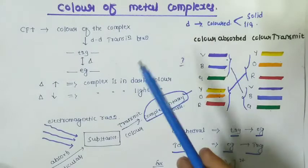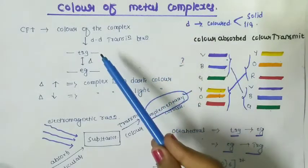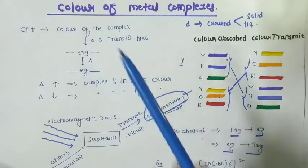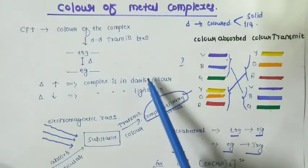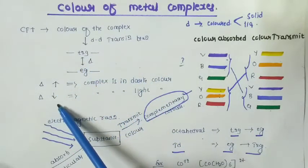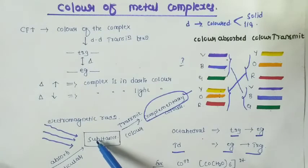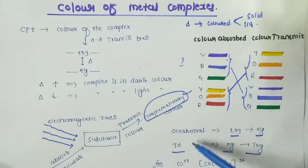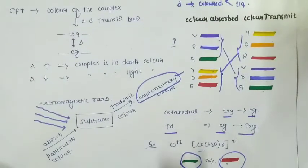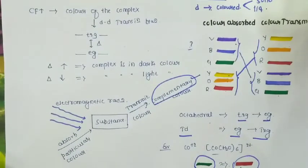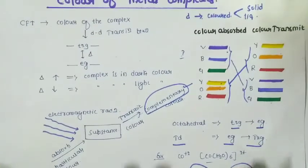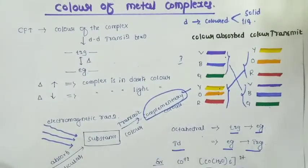In summary, according to CFT, the color of metal complexes is due to d-d transition between t2g and eg orbitals having energy difference delta. If delta value is more, dark color appears; if delta is less, the complex will be light color. When electromagnetic radiation falls on the substance, it absorbs one color and transmits another complementary color. This is demonstrated in octahedral and tetrahedral complexes, such as the cobalt example, which shows how color of metal complexes works.